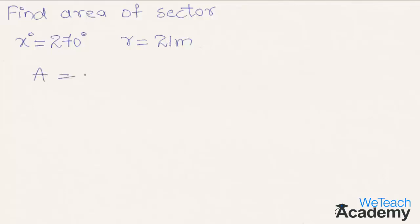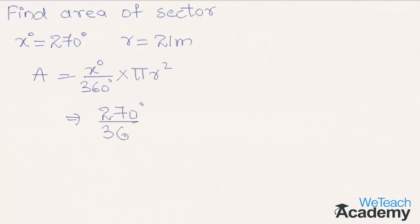The area of a sector is given by the formula: x degrees divided by 360 degrees, into pi r squared. By substituting both values in the formula we get 270 divided by 360, into the value of pi that is 22/7, into r squared that is 21 into 21.